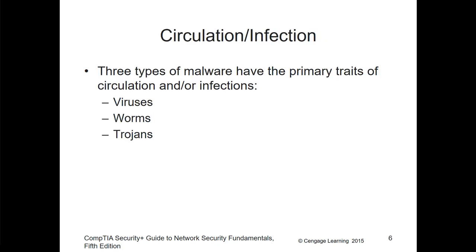For circulation or infection, there are three types of malware with primary traits: viruses, worms, and Trojans. Viruses are typically classified as a type of malware — malware is not a type of virus. We typically talk about viruses, but not all viruses are malware and not all malware are viruses. Viruses are classified as a type of malware.